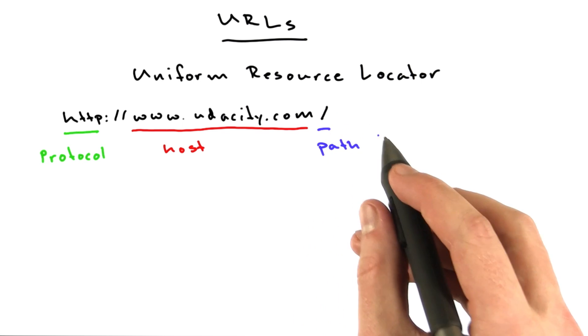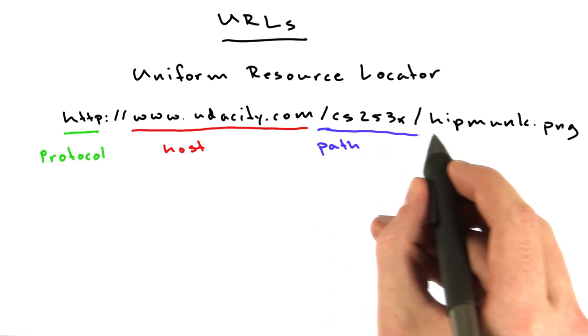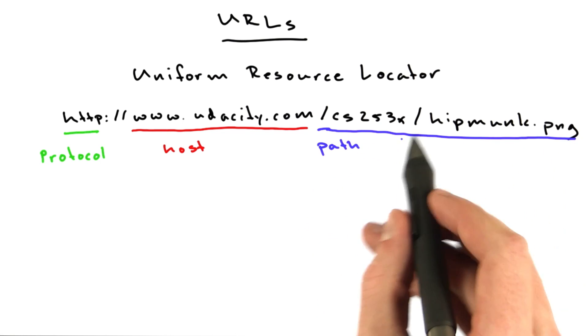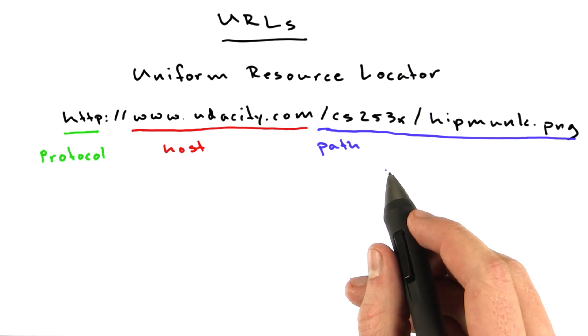Now, the path can be more complicated. So the path would be this whole thing if we were accessing the image we were using in the previous part of the lecture.